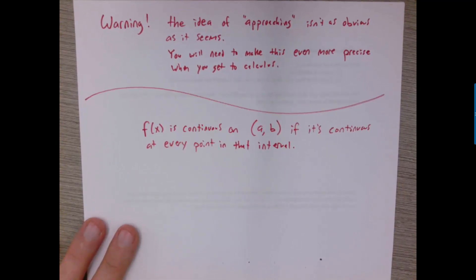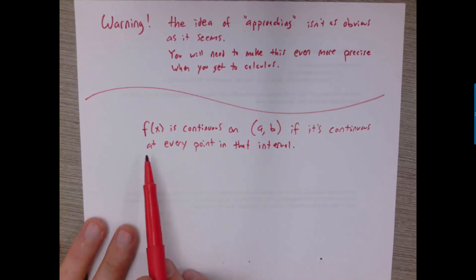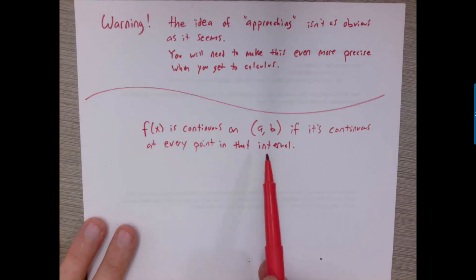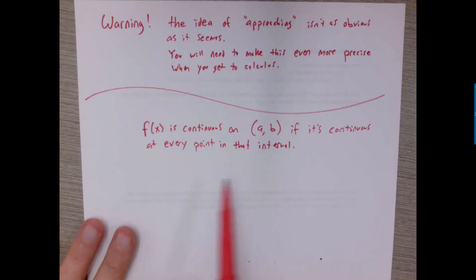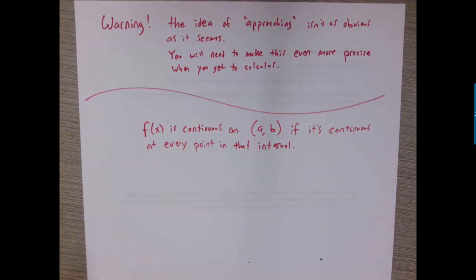Finally, we only defined what it means for a function to be continuous at a particular x value. Maybe we want to ask what it means for a function to be continuous on a larger interval. We'll just define that f is continuous on the open interval (a, b) if it's continuous at every single point inside that interval. And now we have a working definition for continuity over larger intervals.